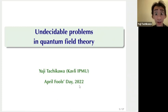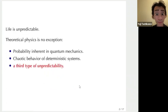Hi, I'd like to give a short presentation about my April Fool's Day paper. It's about undecidable problems in quantum field theory. Life is unpredictable and theoretical physics is no exception. Probability is inherent in quantum mechanics and many deterministic systems show chaotic behavior. But today I'd like to talk about the third type of unpredictability.